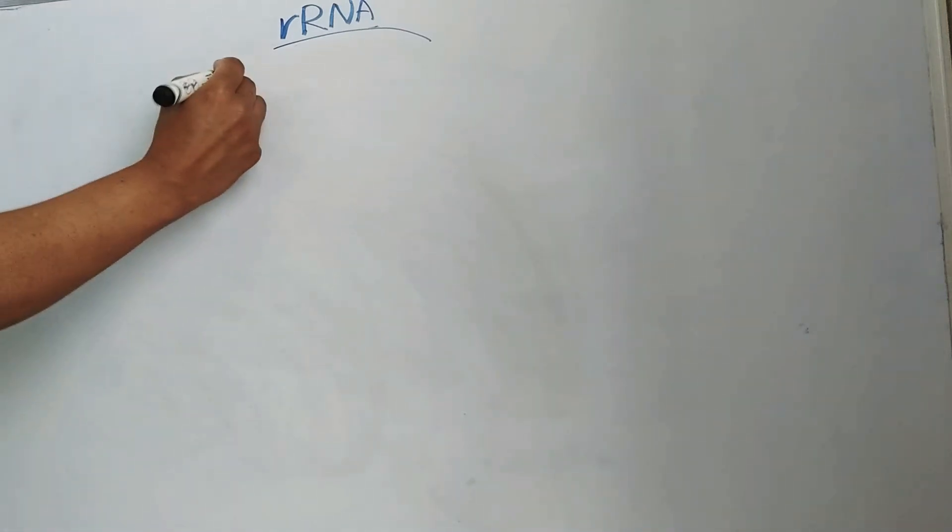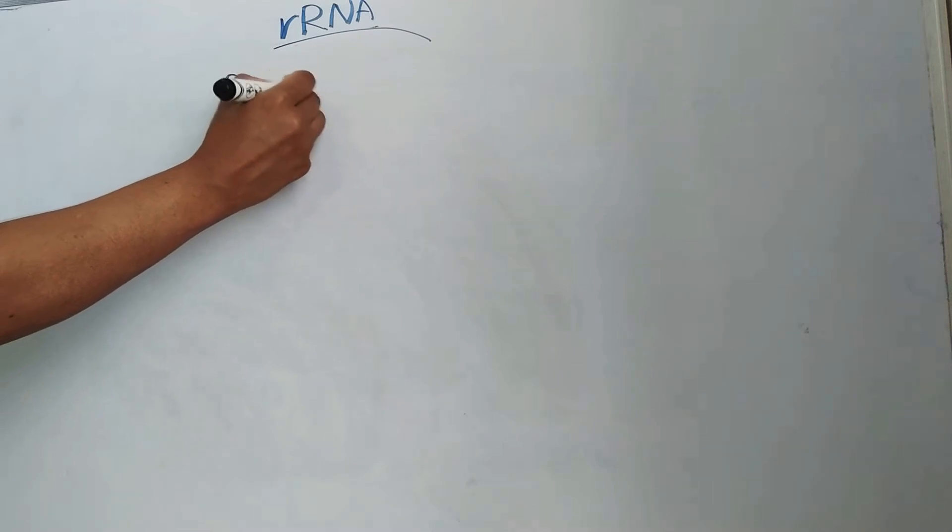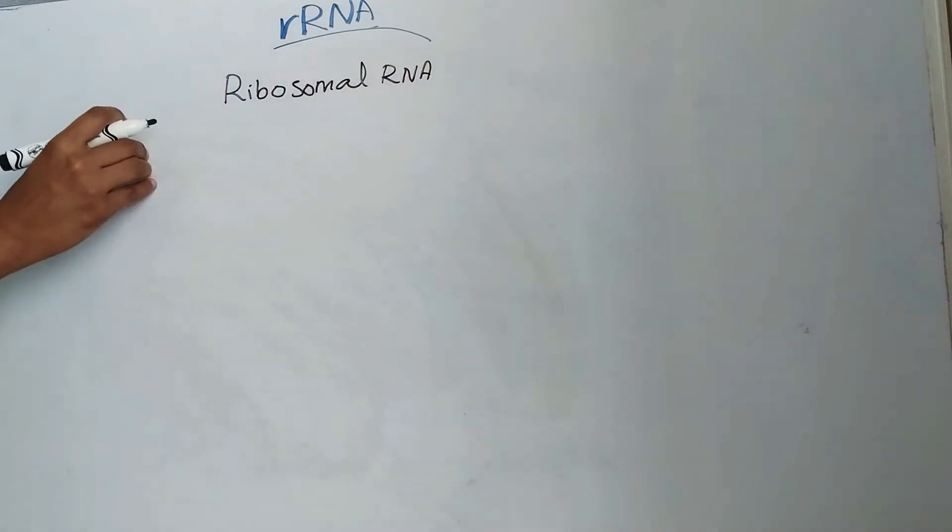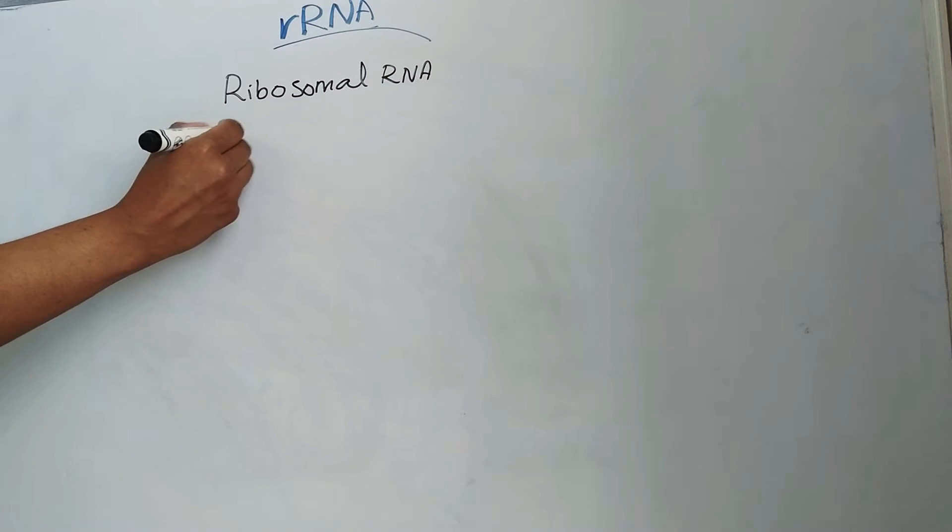Hello everyone. Today we will discuss rRNA, that is ribosomal RNA. The RNA of the ribosome is known as rRNA. rRNA forms about 80% of the total cellular RNA.